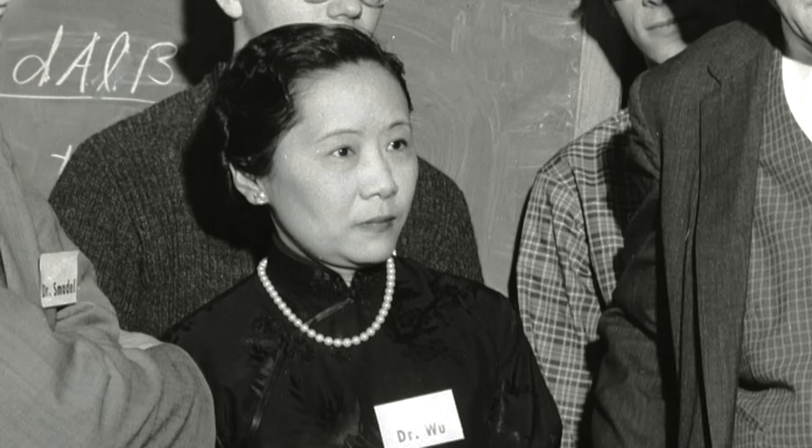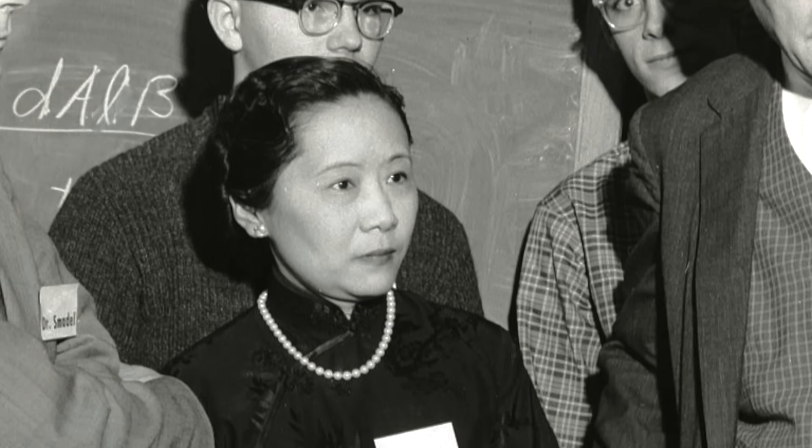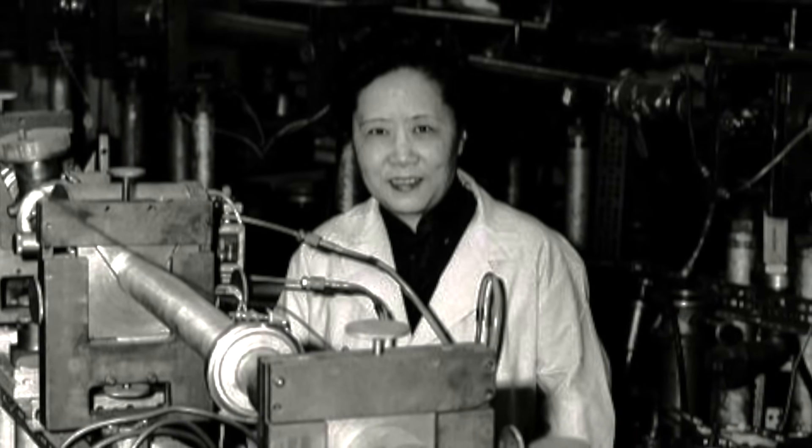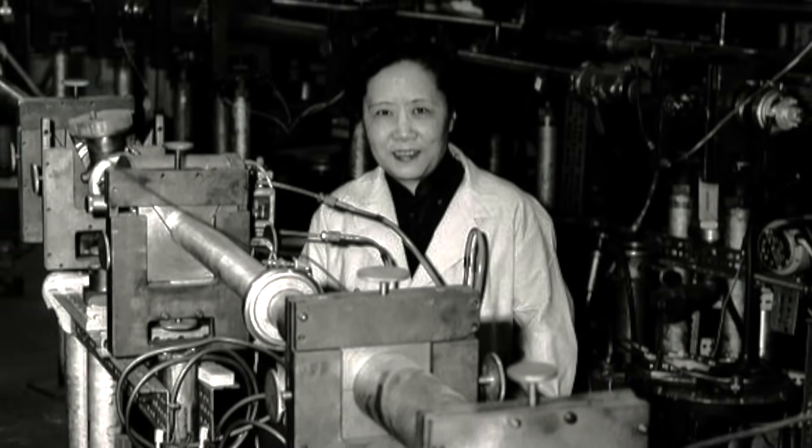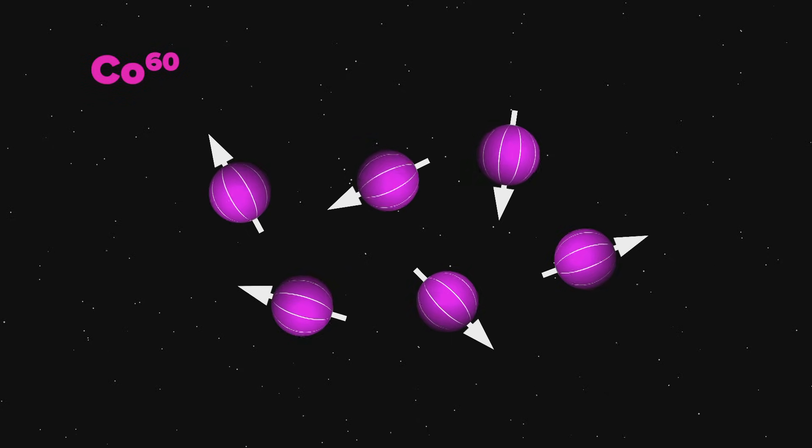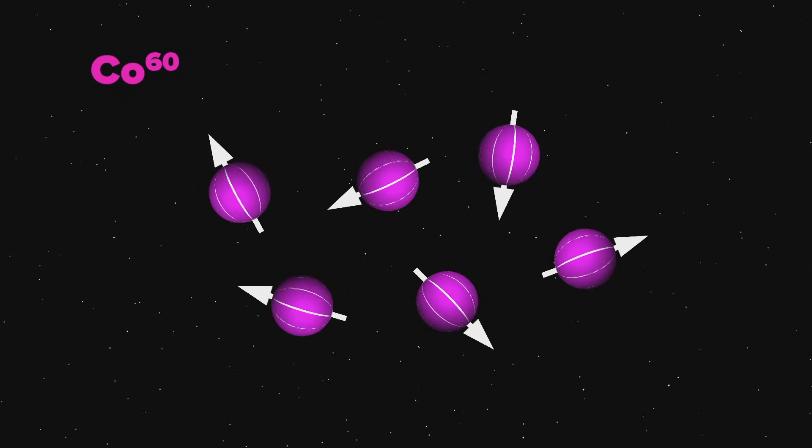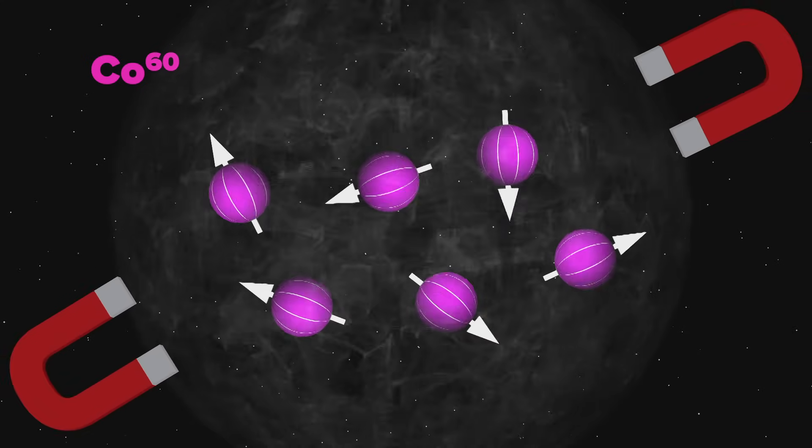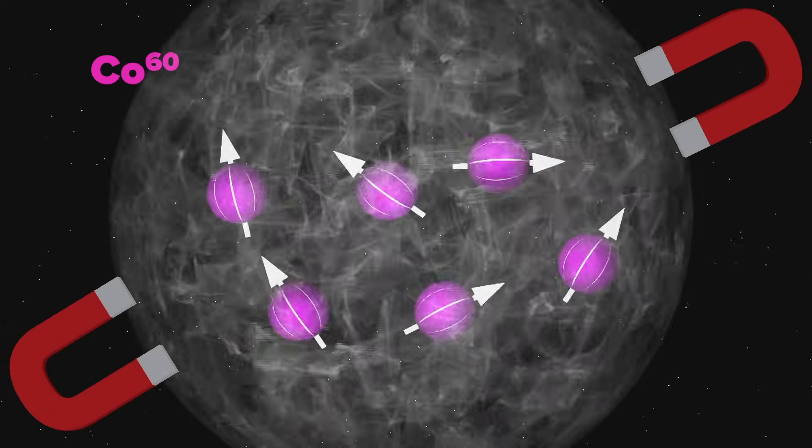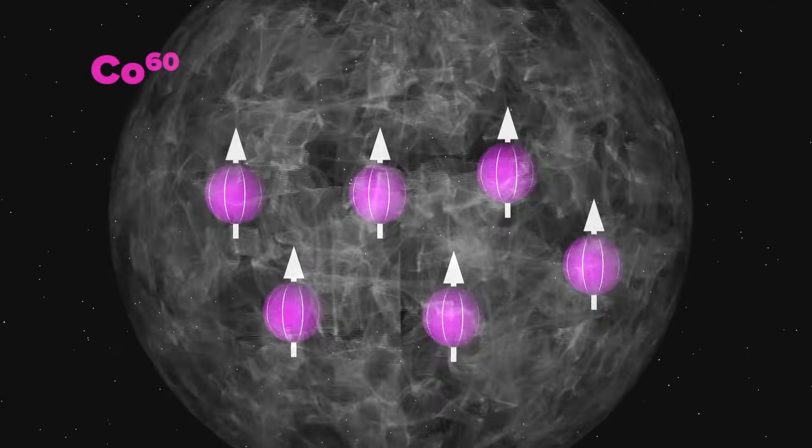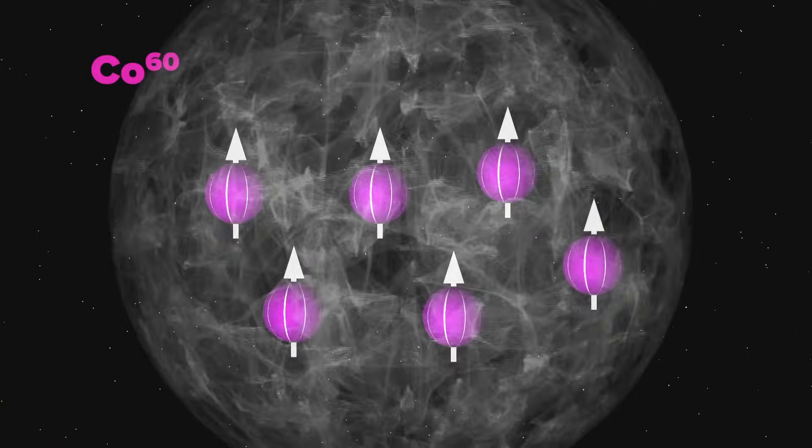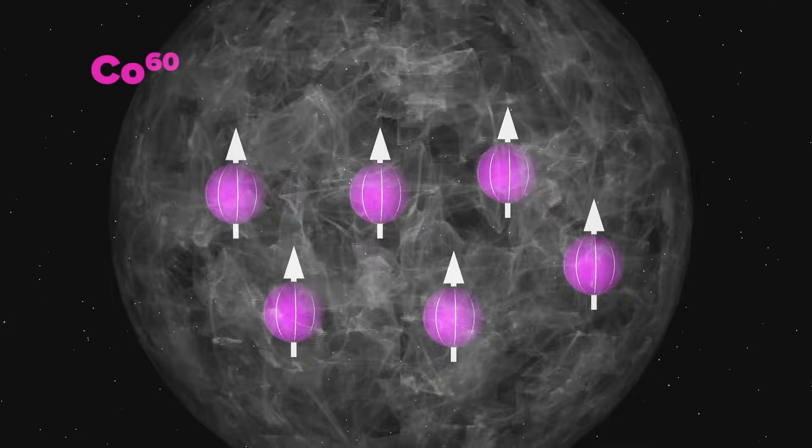So what she decided to do was to set up an experiment in which cobalt-60 would decay via the weak force into nickel-60, an electron, and an electron antimatter neutrino. In order to test whether the weak force cared about spin and spin directions, Wu had to set up a very strong magnetic field to align the spin of the cobalt nuclei. Spin is one of those things that is conserved, which means that it has to be the same before and after an interaction.